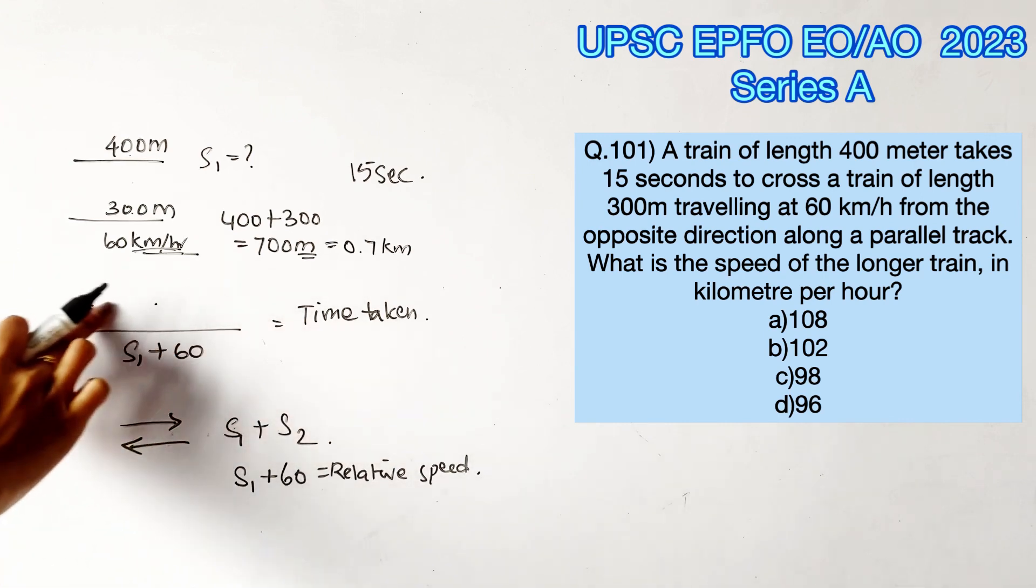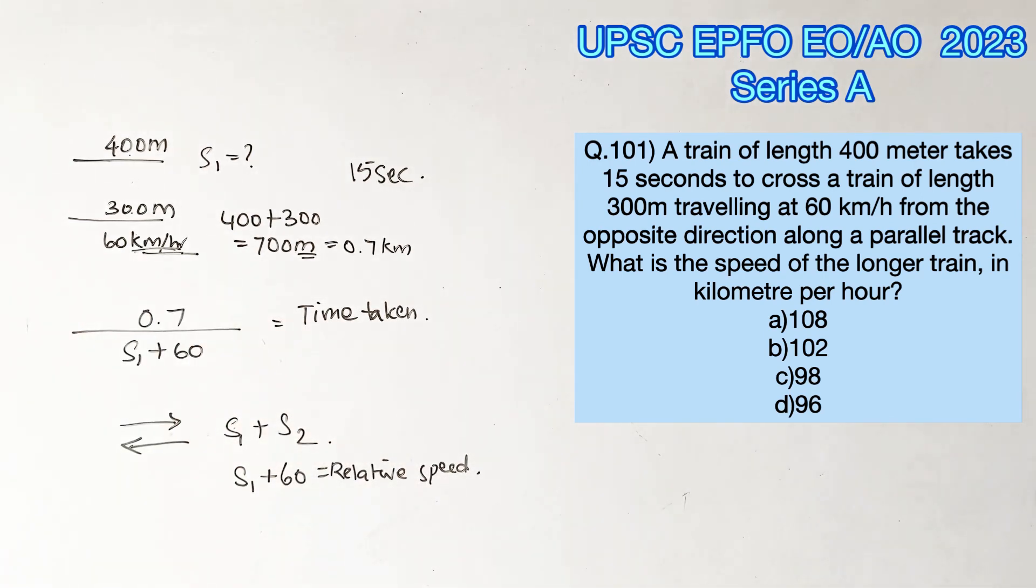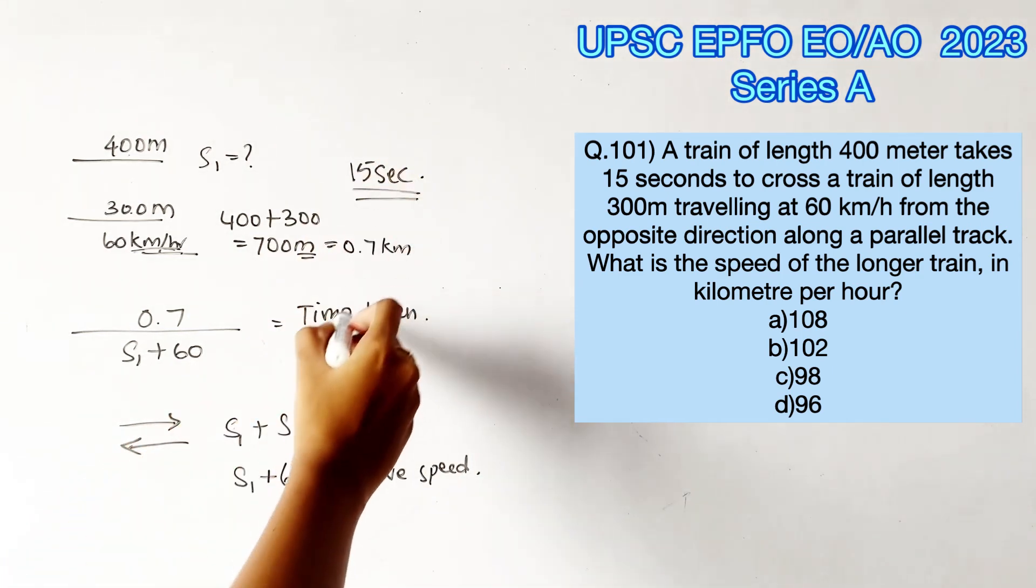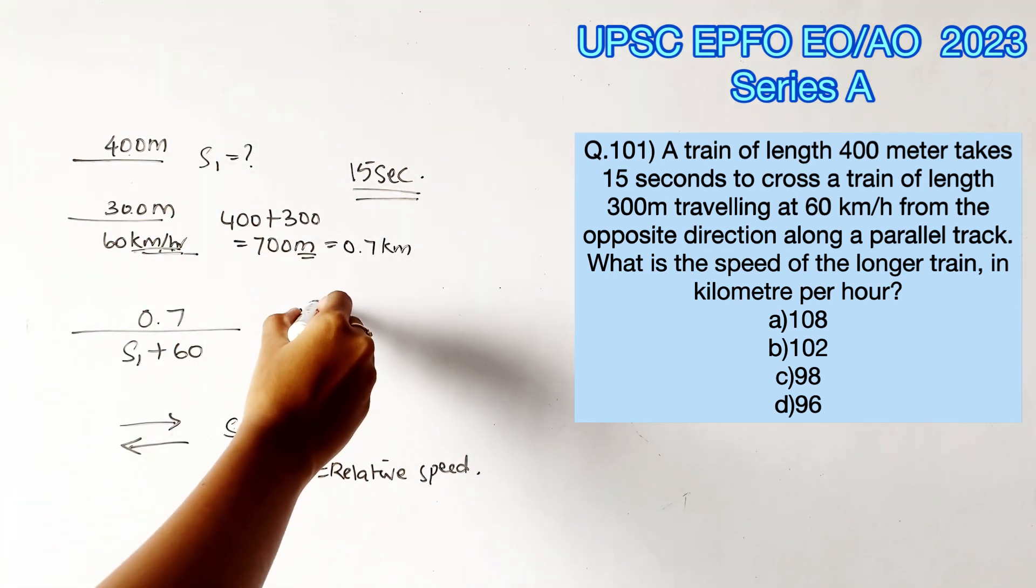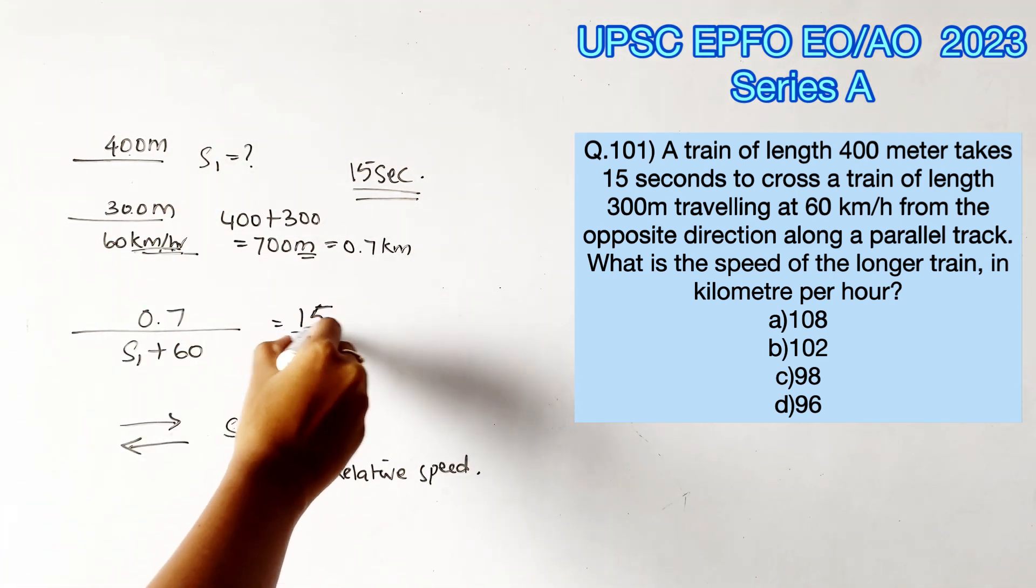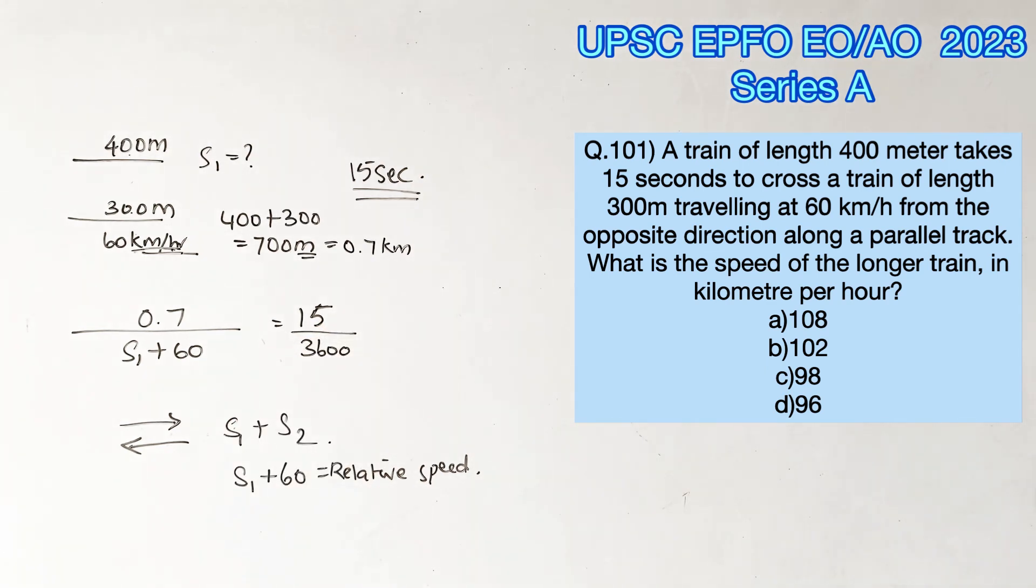We know that 15 seconds was the time taken. Since the other values are in kilometers per hour, we need to convert seconds to hours. One hour comprises 3600 seconds, so we divide 15 by 3600.